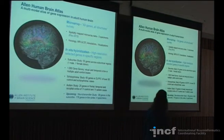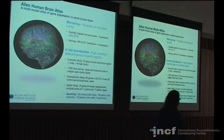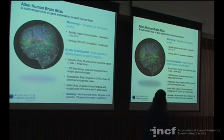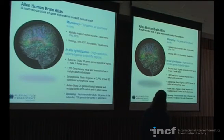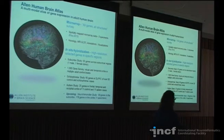The Human Brain Atlas has a microarray component as its main component. It was designed as an all-genes, all-structures survey. We sample throughout the cortex and the subcortex, and those data points are spatially mapped back to the MRI of that case so that you can go into every individual specimen and see exactly where that sample came from.